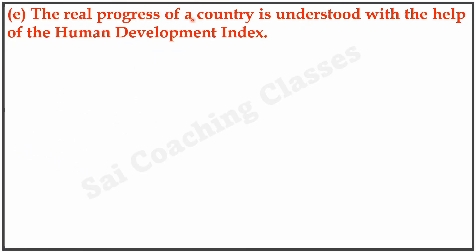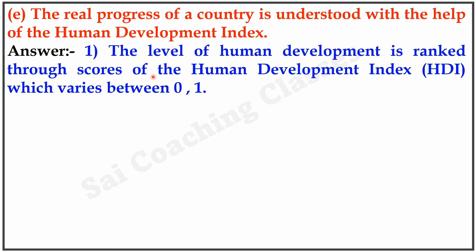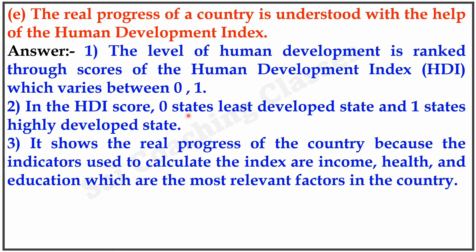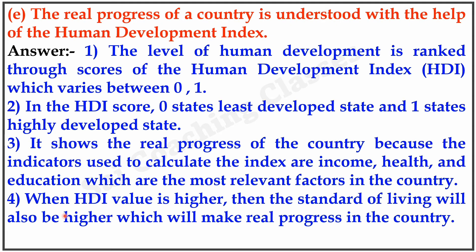E. The real progress of a country is understood with the help of the Human Development Index. Answer: The level of Human Development is ranked through the score of the HDI, which varies between 0 and 1. A score of 0 states the least developed state and 1 the highly developed state. It shows the real progress of the country because the indicators used — income, health, and education — are the most relevant factors. When the HDI value is higher, the standard of living will also be higher, indicating real progress.